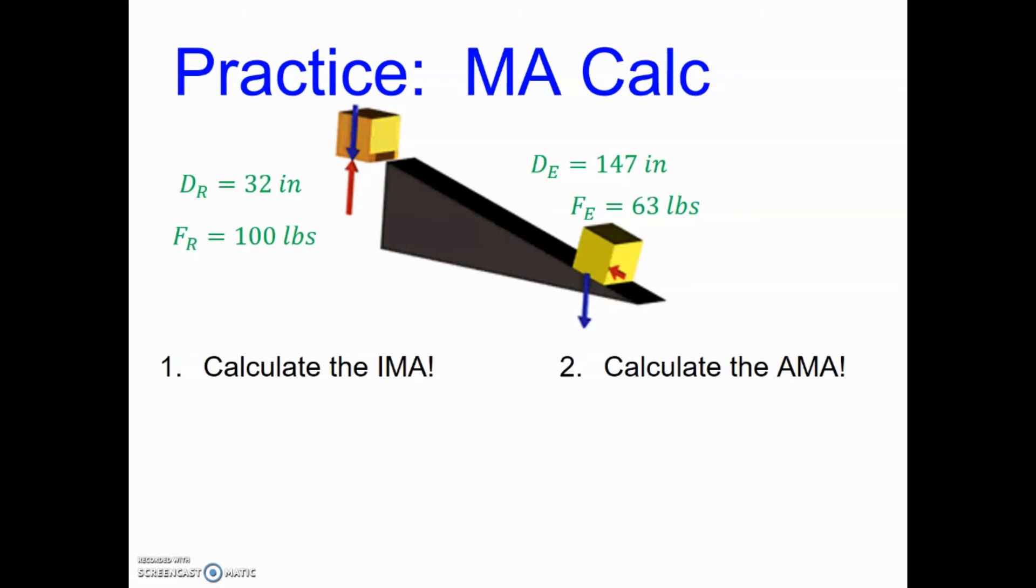So I'm going to pull the IMA equation that we need to do our calculations and we know that it's our effort distance divided by our resistance distance and I'm going to toss those numbers right in there, put them in my handy-dandy calculator. I know inches cancel out because they're on the top and on the bottom and I come up with an IMA of 4.59.